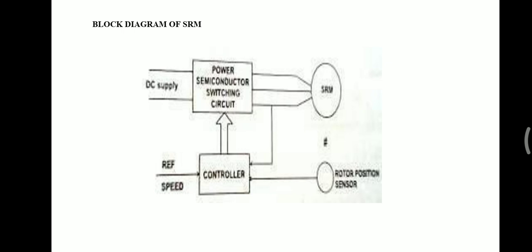Now the block diagram of switch reluctance motor. Here you can see the block diagram where DC supply is given to the power semiconductor switching circuitry. When the supply is given, the various phases of the phase windings of the SRM will be excited. The rotor position sensor, which is mounted on the shaft of the switch reluctance motor, generates a signal and controls the position of the rotor with reference to the reference axis.